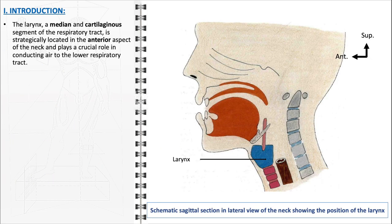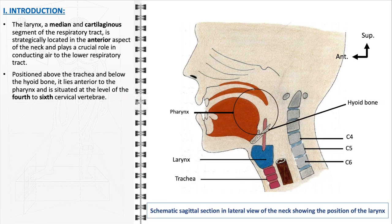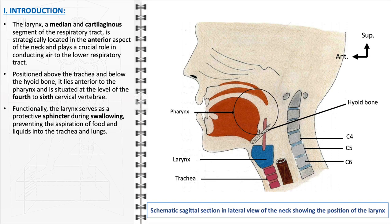The larynx, a key structure in the respiratory and vocal systems, is uniquely positioned in the anterior aspect of the neck, playing a pivotal role in air conduction to the lower respiratory tract. Anatomically, it is located above the trachea and below the hyoid bone, anterior to the pharynx, and aligns with the fourth to sixth cervical vertebrae. This median cartilaginous segment of the respiratory tract is not only vital for breathing and voice production but also serves as a critical protective mechanism. During swallowing, the larynx acts as a sphincter, effectively preventing the aspiration of food and liquids into the trachea and lungs. This protective action is essential for maintaining a clear airway and preventing pulmonary complications.